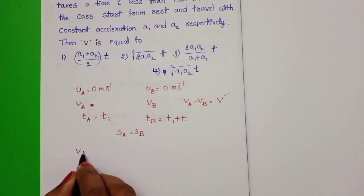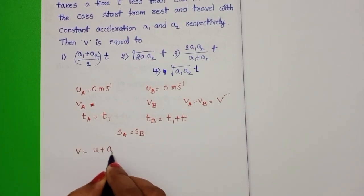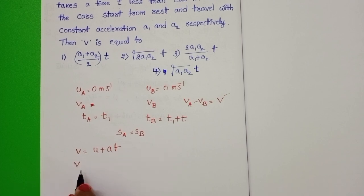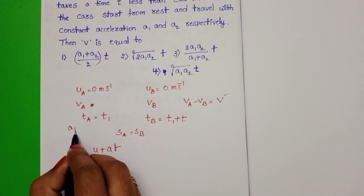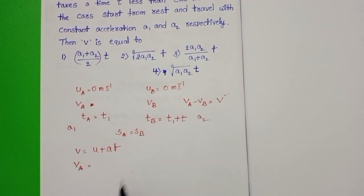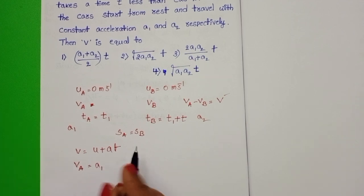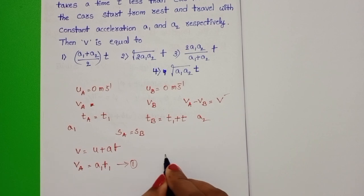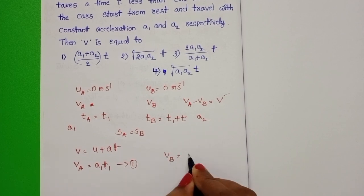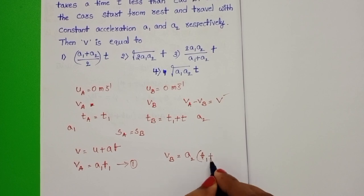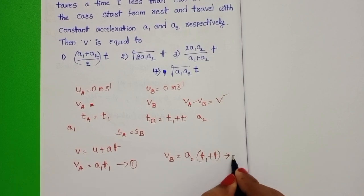Take first equation of motion. V is equals to U plus AT. Final velocity of car A, VA, initial velocity is 0. Given acceleration of car A is A1 and car B is A2. A1 into T1. Take equation 1 and VB is equals to A2 into T1 plus T. Take equation 2.